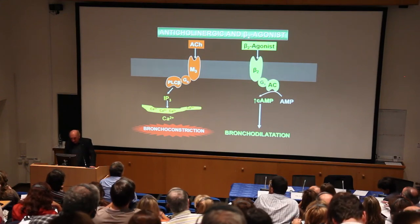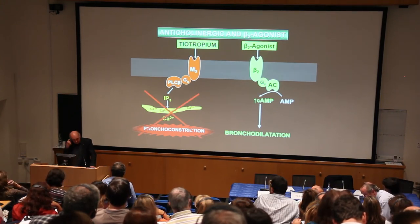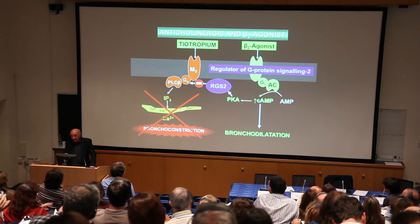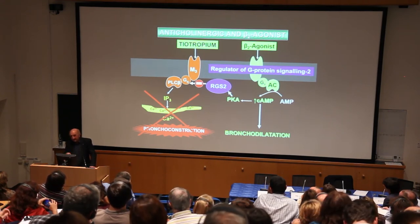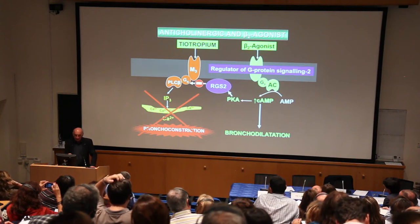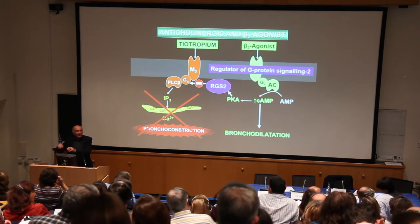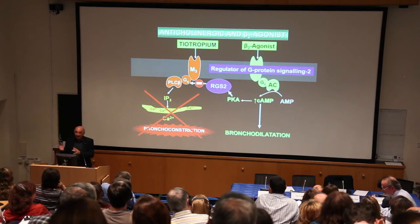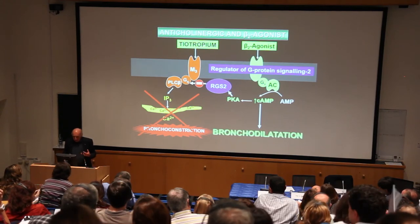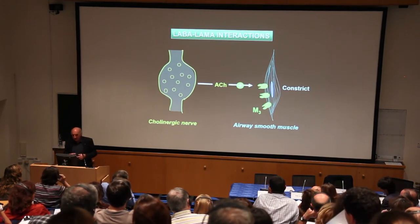There is another type of crosstalk. The beta agonist pathway generates a protein called regulator of G protein signaling 2 (RGS2), which inhibits the G protein coupling the M3 receptor to bronchoconstriction. So not only does the cholinergic pathway inhibit the adrenergic pathway, the adrenergic pathway inhibits the cholinergic pathway — a two-way inhibition that enhances bronchodilation. Additionally, LABAs act on beta-2 receptors on cholinergic nerves to inhibit acetylcholine release, providing yet another way these two pathways interact.